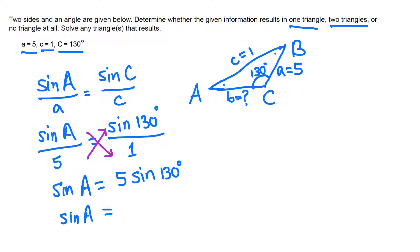Let me use my calculator. It gives 3.83. This is not good because sine of any angle should always be between negative 1 and 1. This is bigger than 1.